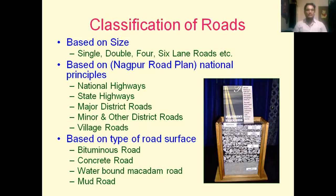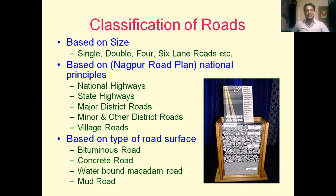Based on the Nagpur Road Plan and national principles, roads in India are classified as national highways, state highways, major district roads, minor and other district roads, and village roads. Based on the type of road surface, roads are classified as bituminous roads — also called flexible pavement — concrete roads, which are rigid pavement, waterborne macadam roads, and mud roads.